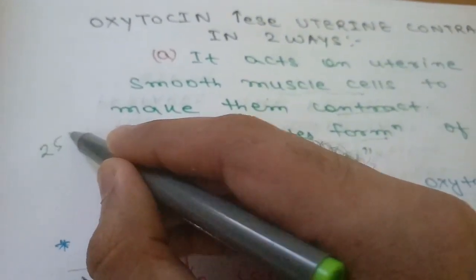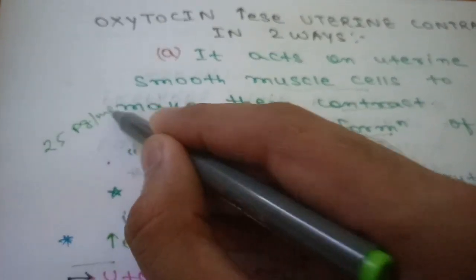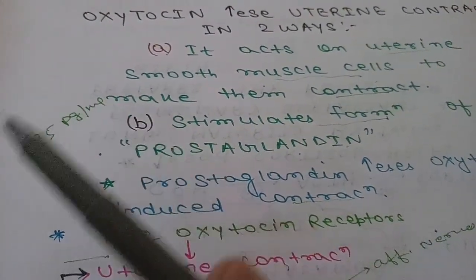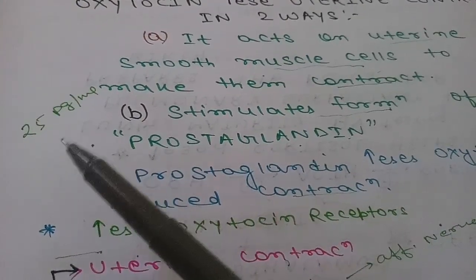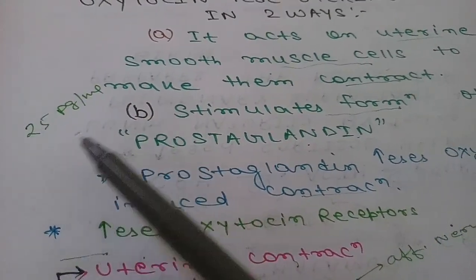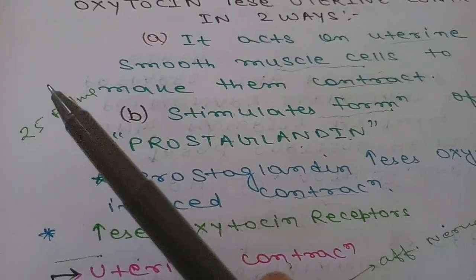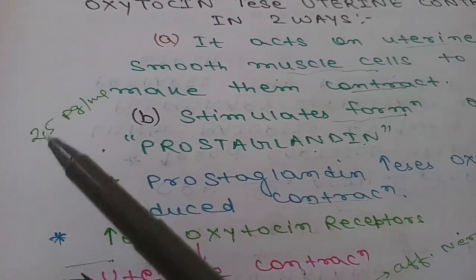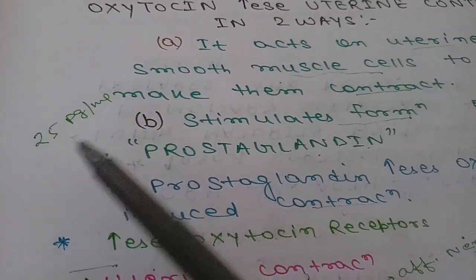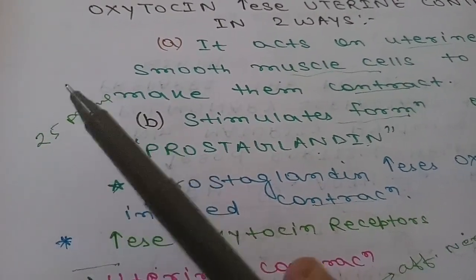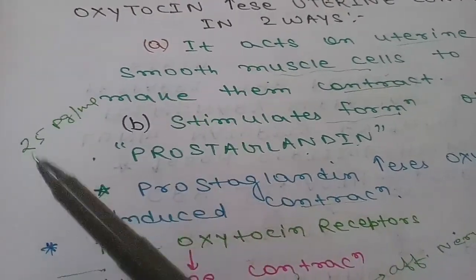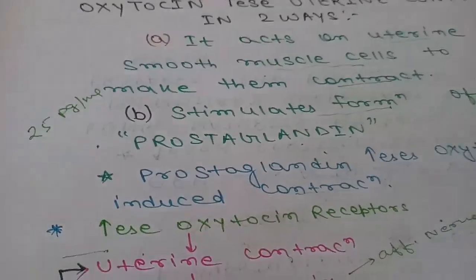The pre-labor value of oxytocin in plasma is 25 picograms per ml. In the initial early labor, the level of oxytocin remains the same, but its action increases due to the increasing number of oxytocin receptors. This is the concept which I will use in my next video to explain a conceptual question. Thanks for watching.